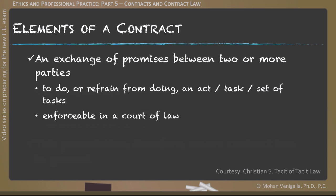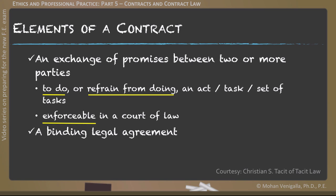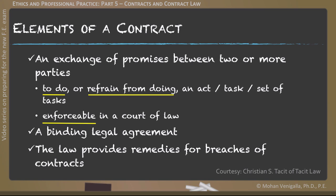First, what is a contract? A contract is an exchange of promises between two or more parties to do or refrain from doing an act, which is enforceable in a court of law. 'Enforceable' is the keyword here. It is a binding legal document and the law provides remedies for breaches of contracts.